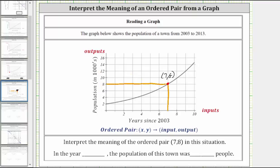So this ordered pair tells us that in the year 2010, the population of this town was 8,000. I hope you found this helpful.